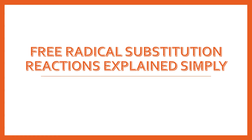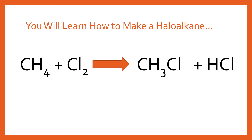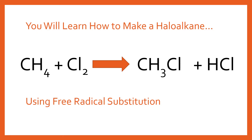In this video I'm going to explain in a simple and easy to follow way how free radical substitution reactions actually work. We're going to learn how to make a haloalkane and study a worked example: the reaction of methane with chlorine gas to form chloromethane and hydrochloric acid. This synthesis of the haloalkane is done using free radical substitution, and it's a great example to understand the process.